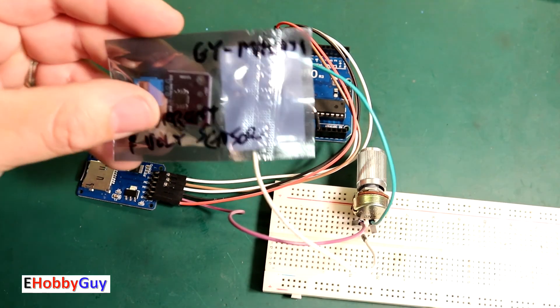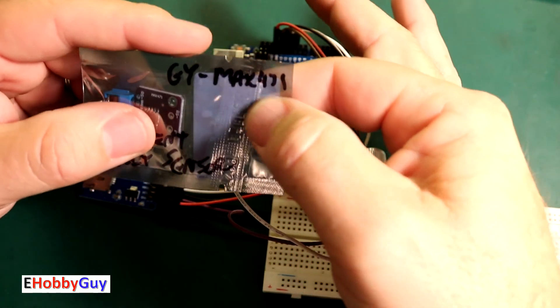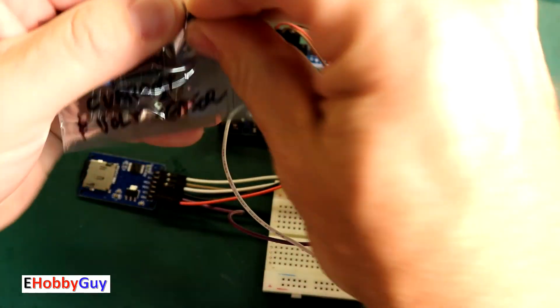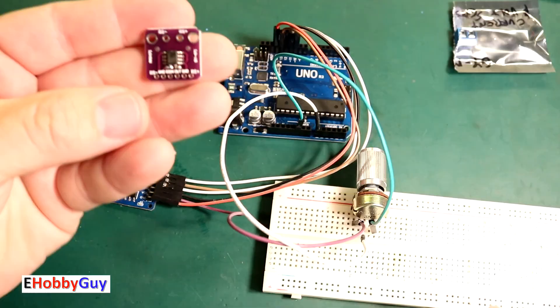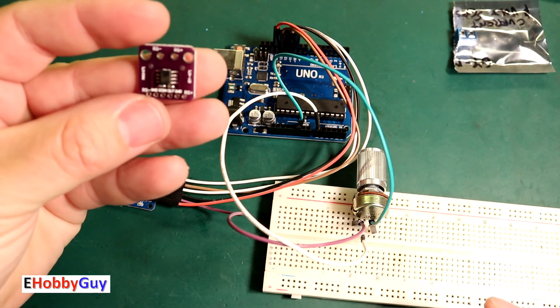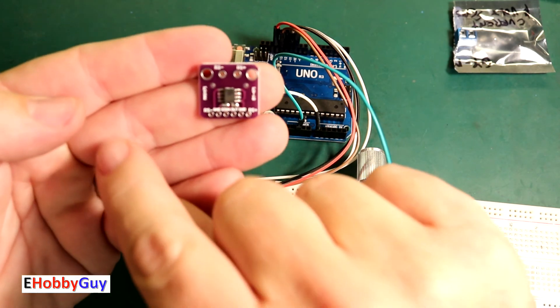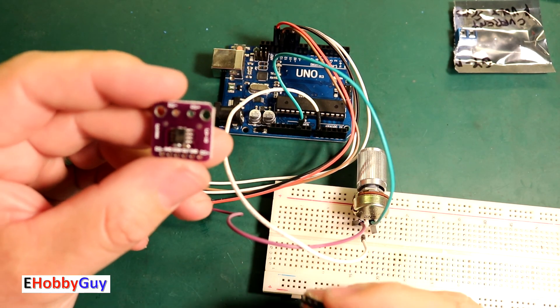I do have this other GY-MAX 471 current and voltage sensing module. What I've read about this is the resolution is a lot better, so I think I'll play around with this in the near future. This module uses the I squared C communication protocol which I really like.